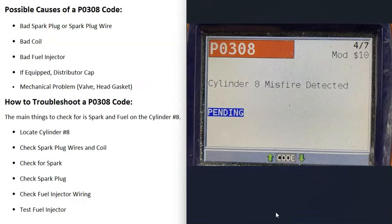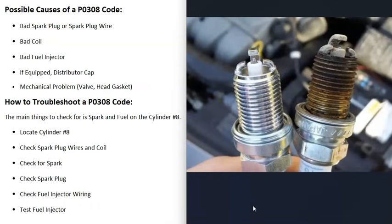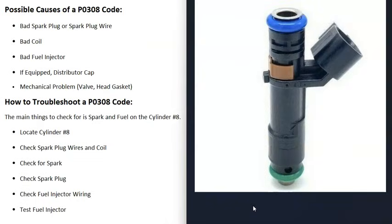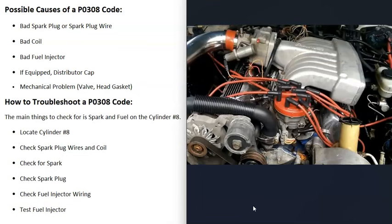Possible causes of a P0308 code include a bad spark plug or a bad spark plug wire, a bad coil on cylinder 8, or a bad fuel injector on cylinder 8. If you have an older vehicle with a distributor cap, it could be a bad distributor cap. It's also possible there's a mechanical problem such as a bad valve or a leaking head gasket on cylinder 8, although that's less common. Usually the issue is with the spark or fuel going to cylinder 8.